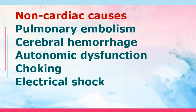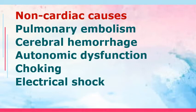Non-cardiac causes: pulmonary embolism, where an embolus travels to your pulmonary artery, blocking pulmonary circulation. Then cerebral hemorrhage — hemorrhagic stroke, with severe bleeding in the brain. Even though the cardiac system is vital, it is still dependent on the functioning of your brain. Autonomic dysfunction involves an imbalance between the sympathetic and parasympathetic nervous systems, which may lead to sudden cardiac death. Choking — due to a sudden decrease in oxygen supply — can lead to cardiac arrest. And electrical shock leads to ventricular fibrillation, leading to sudden cardiac arrest.